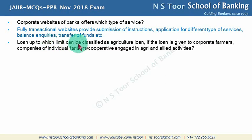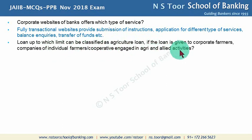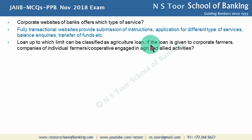Loans up to Rs. 2 crore can be classified as agriculture loans if the loan is given to corporate farmers, companies of individual farmers, or cooperatives engaged in agriculture and allied activities. When the loan is given to non-corporate farmers, there is no limit.